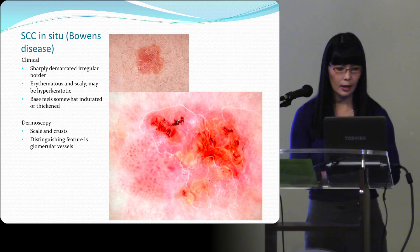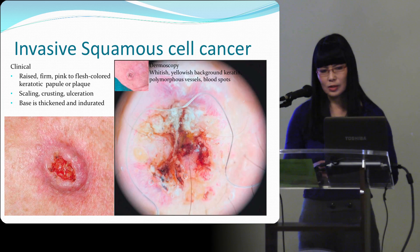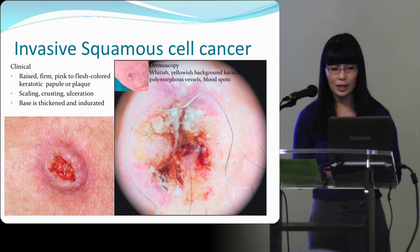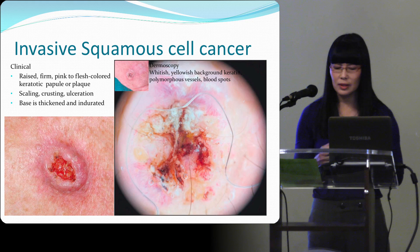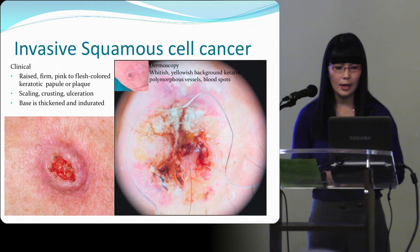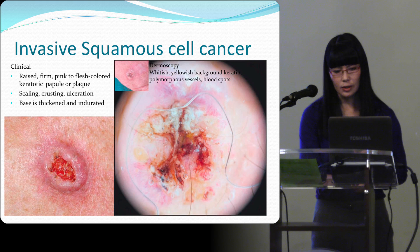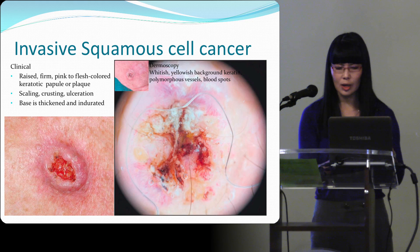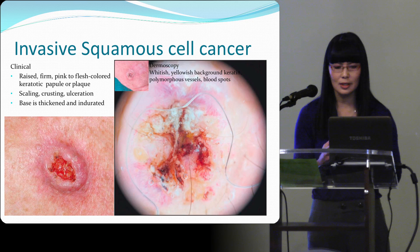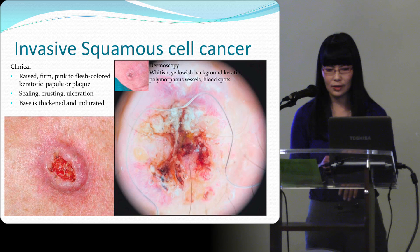If you see glomerular coil dot vessels on dermoscopy, most likely it's beyond AK. Invasive squamous cell cancer is much more clinically recognizable — it's raised, firm, pink or flesh-colored, a keratotic papule or plaque with scaling, crusting, sometimes ulceration. The base is really thick and indurated because it's in the dermis. On dermoscopy you see white-yellowish keratin, blood spots, and polymorphous vessels — linear long ones, coiled or hairpin ones — a variety of them in squamous cell cancer.